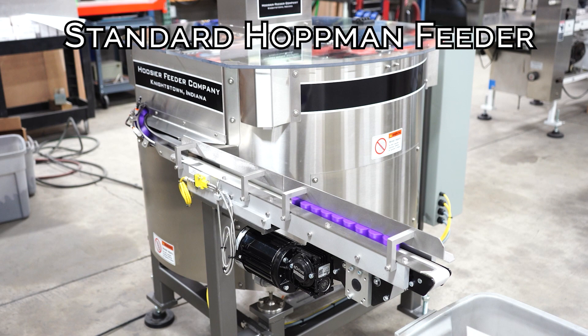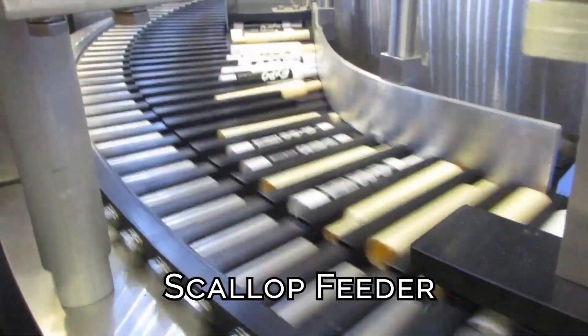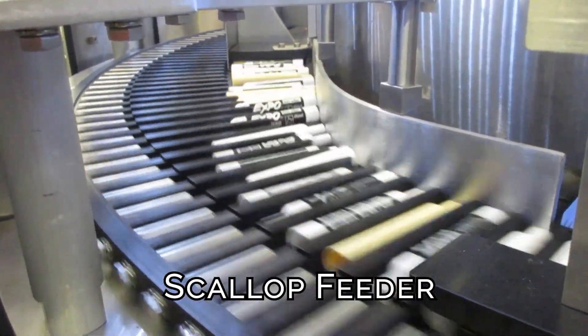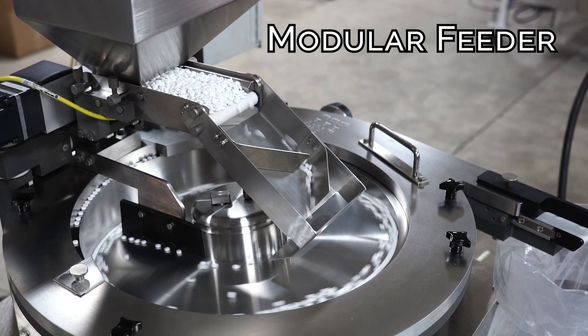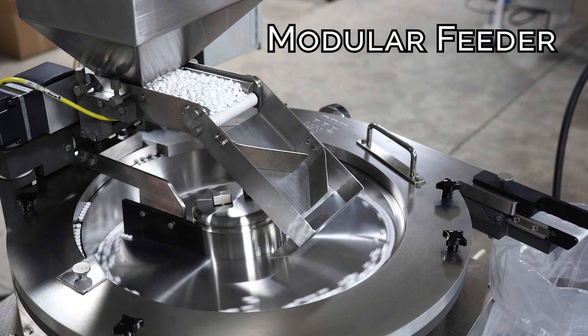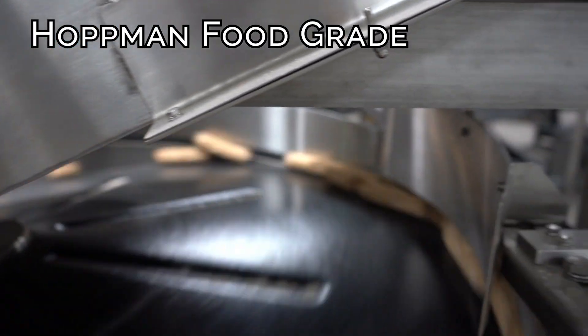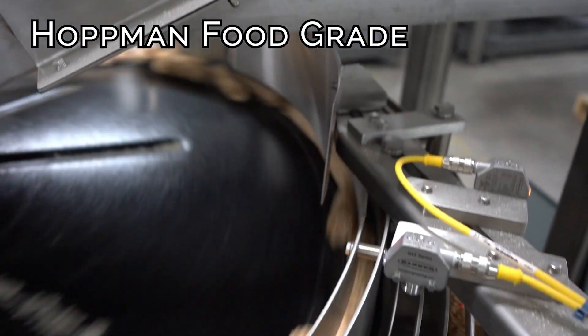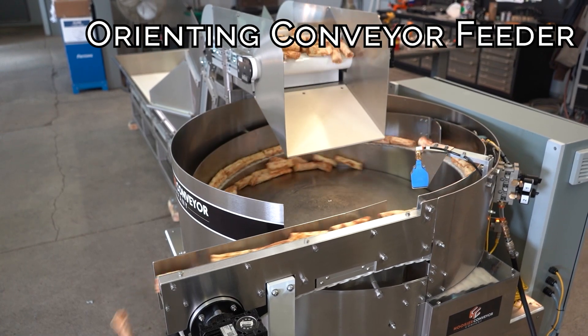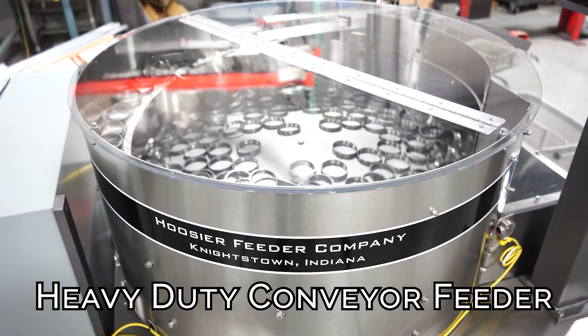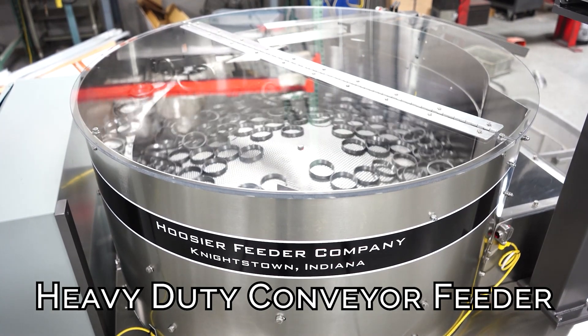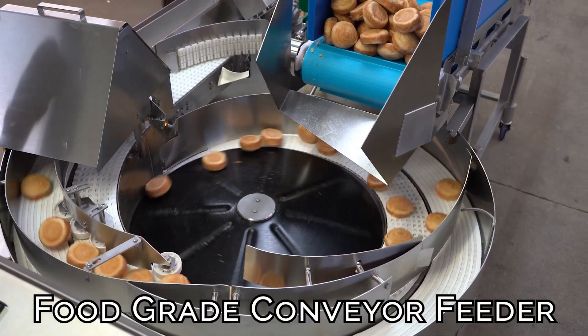Other styles include Scallops, which are better suited for cylindrical parts or parts with high length to diameter ratio, modular, Hopman food grade, orienting conveyor feeder, heavy-duty conveyor feeder, and food grade conveyor feeder.